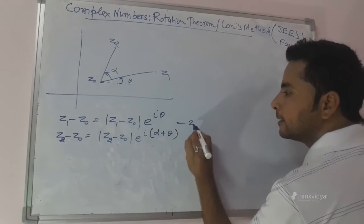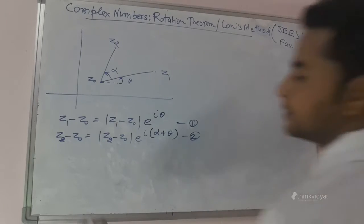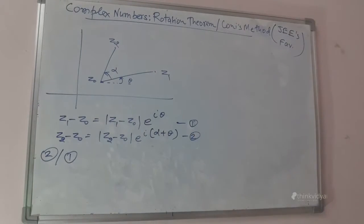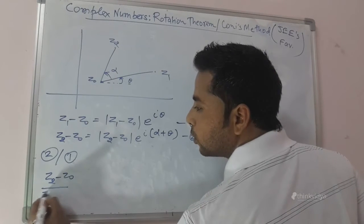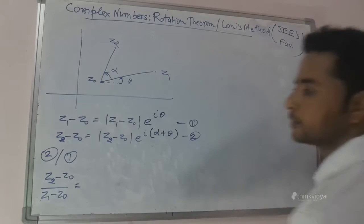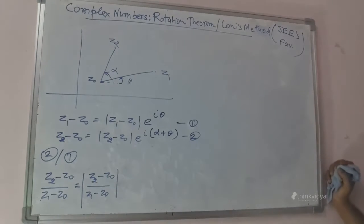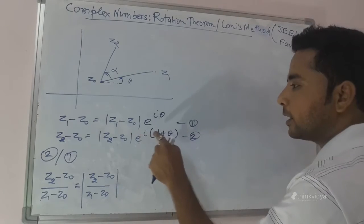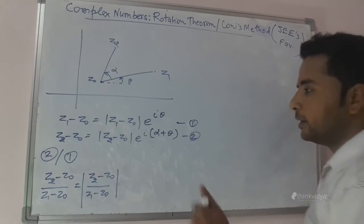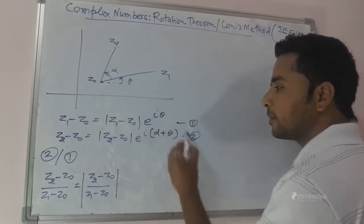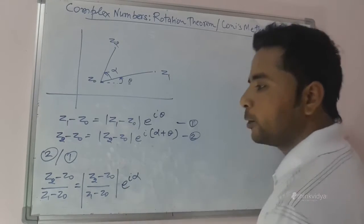Let us consider the first expression as equation 1 and the second as equation 2. If I divide equation 2 by equation 1, then what we get is: (Z2 minus Z0) over (Z1 minus Z0) equals |Z2 minus Z0| over |Z1 minus Z0| times e raised to the power iota. If you carefully divide e raised to the power iota times (alpha plus theta) by e raised to the power iota theta, what you get is e raised to the power iota alpha.